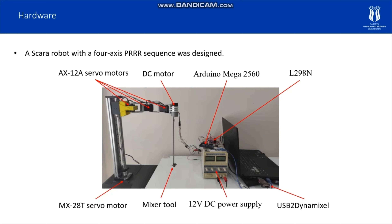The components of the system are: two servo motors, a USB2 Dynamixel control card, a DC motor, a mixing tool, an Arduino Mega 2560, an L298N motor driver board, and a DC power supply. Servo motors are controlled by the USB2 Dynamixel control card. A DC motor is used at the end effector as a mixing tool. On the shaft of the DC motor, a mixer propeller is mounted. The DC motor is controlled by the Arduino Mega 2560 microcontroller and the L298N motor driver board.